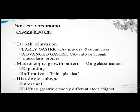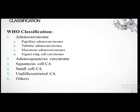Once diagnosis is established, staging workup includes CT scan, endoluminal ultrasound, PET scan, and laparoscopic staging. PET scan is more sensitive than CT for detecting distant metastasis and is also useful for detecting lymph nodes. However, a negative PET is not always helpful, as even large tumors can be falsely negative if metabolic activity is low. Most diffuse gastric cancers and signet ring cell cancers are not FDG-avid.